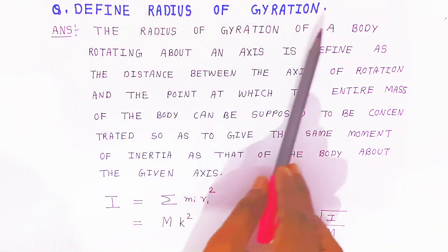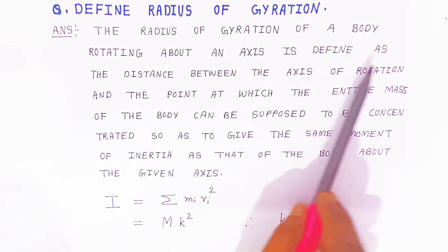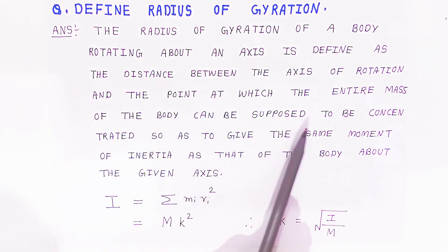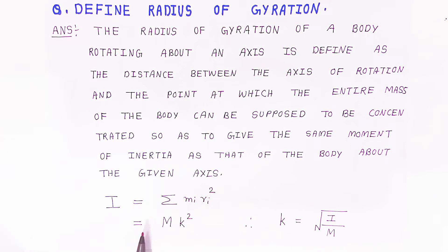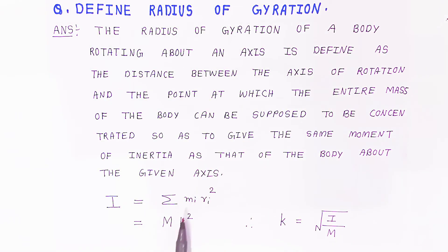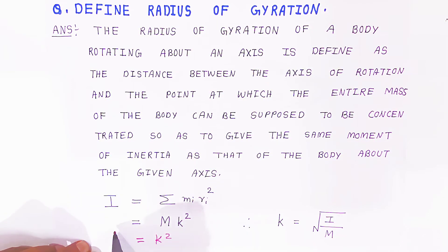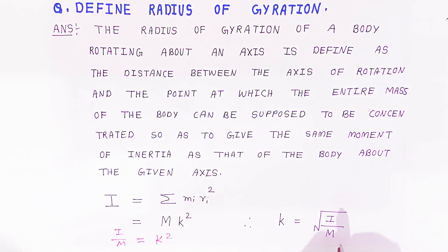Now we are going to define the radius of gyration. The radius of gyration of a body rotating about an axis is defined as the distance between the axis of rotation and the point at which the entire mass of the body can be supposed to be concentrated so as to give the same moment of inertia as that of the body about the given axis. That is, I equals M k², so k equals the square root of I upon M. This is the radius of gyration.